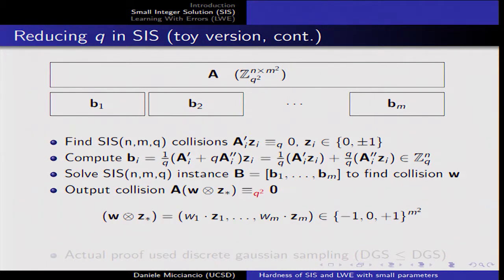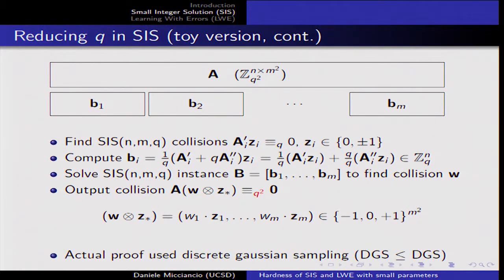By combining these collisions — a collision of collisions — the result is still a 0-1 vector, so you get a vector with small components, which is a collision to the original function defined by the big matrix A. The actual proof is more involved and is based on discrete Gaussian sampling — technically a reduction from the discrete Gaussian sampling problem to itself for different parameters. I refer you to the paper for more details.